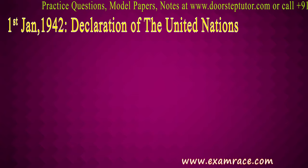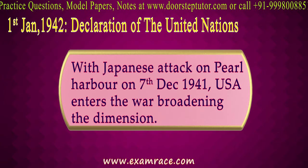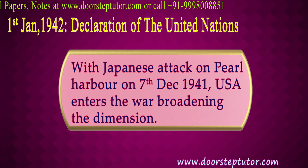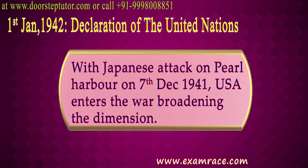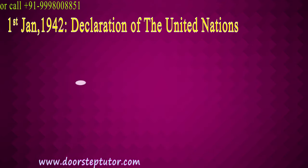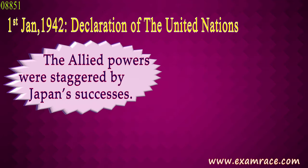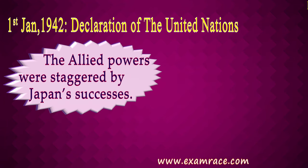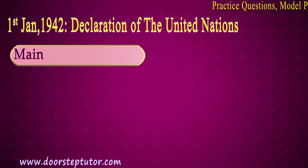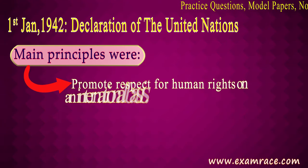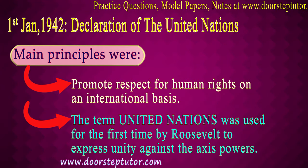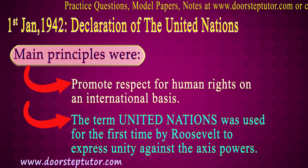On 1st January 1942, the Declaration of the United Nations took place. Following Japan's attack on Pearl Harbor on 7th December 1941, the United States entered World War Two. The Allied powers were staggered by Japan's success. In Washington DC, 26 states signed the declaration, with main principles to promote respect for human rights on an international basis. The term 'United Nations' was used for the first time by Roosevelt to express unity against the Axis powers.